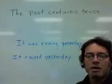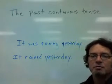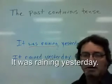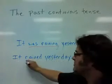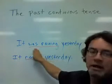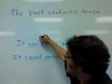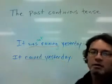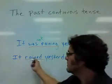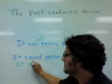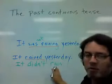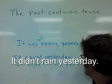The past continuous tense is similar to the past tense. This sentence is in the past continuous tense: 'It was raining yesterday.' This sentence is in the past tense: 'It rained yesterday.' To make the past continuous negative, just add 'not': 'It was not raining' or 'It wasn't raining.' To make the simple past negative, add 'did not' and then the main verb in the simple form: 'It didn't rain yesterday.'